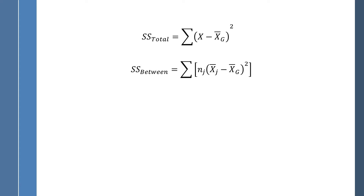The second formula is for the between-group sum of squares. You can see the order of operations designated by parentheses and brackets — do what's inside the parentheses first. Mean-sub-j stands for the mean of the j-th group; if you have four groups, you'll have four means. Take the mean of the group, subtract the grand mean, get that deviation score, square it, and then multiply it by n-sub-j, the sample size of that group.